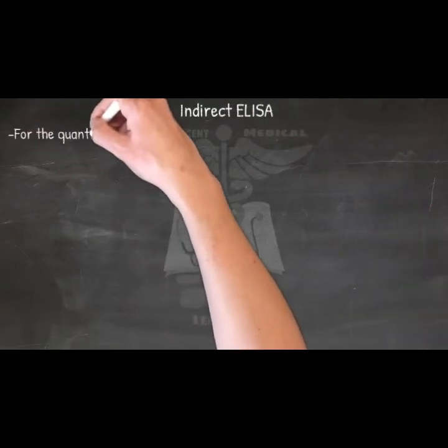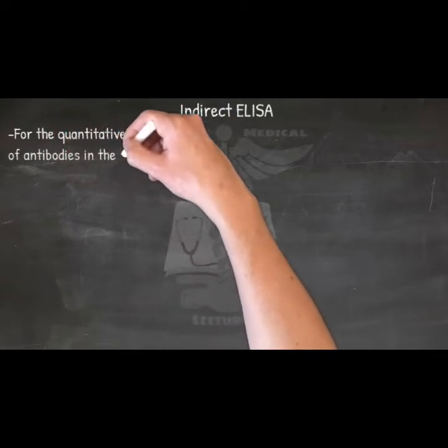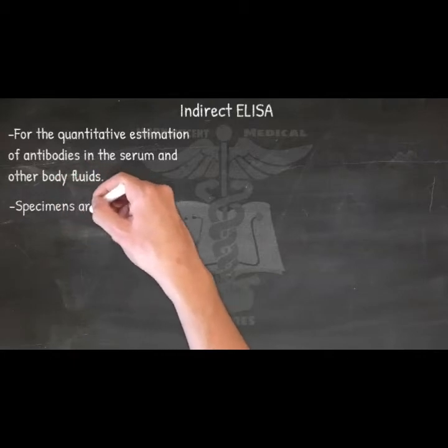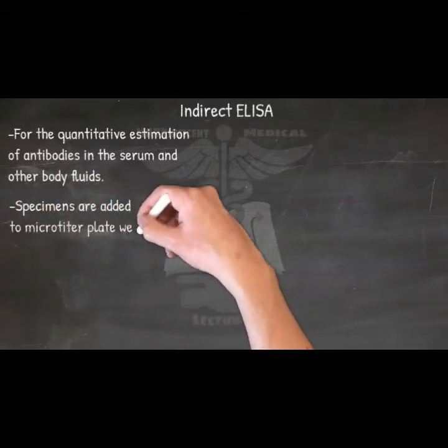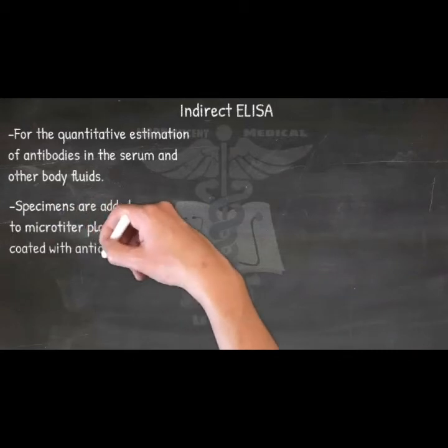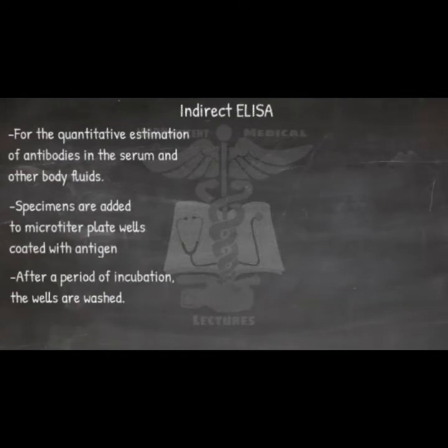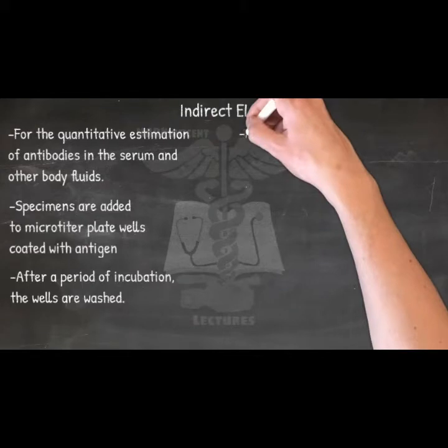Indirect ELISA. The indirect ELISA is used for the quantitative estimation of antibodies in the serum and other body fluids. In this method, specimens are added to microtiter plate wells coated with antigen, to which specific antibodies are to be detected. After a period of incubation, the wells are washed. If antibody was present in the sample, an antigen-antibody complex would have been formed and will not get washed away. On the other hand, if the specific antibody was not present in the specimen, there would not be any complex formation.